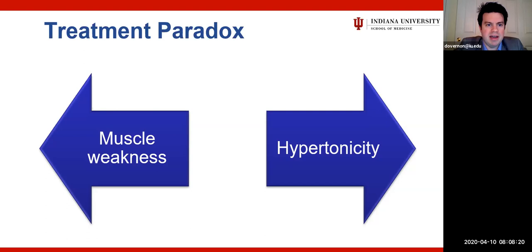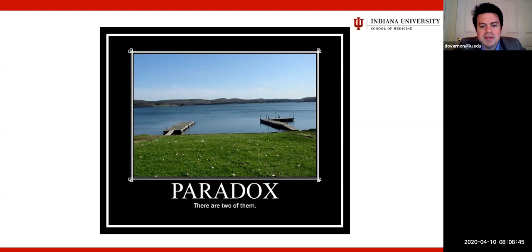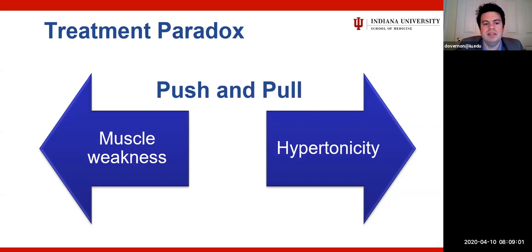Incomplete facial paralysis patients have a treatment paradox: they have some muscle weakness as part of their incomplete recovery, but equally so they have an issue with hypertonicity. I'm calling this a push and pull between muscle weakness and hypertonicity. We need to think about addressing both issues when treating these patients — increasing input for the paretic side versus weakening the wires for those synkinetic, hypertonic muscles that are continuing to fire and cause problems.